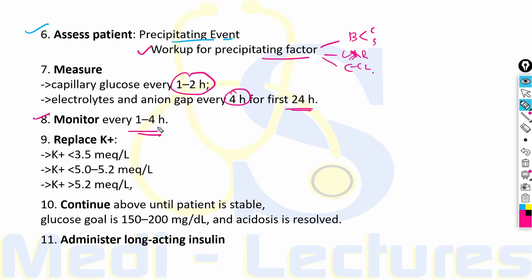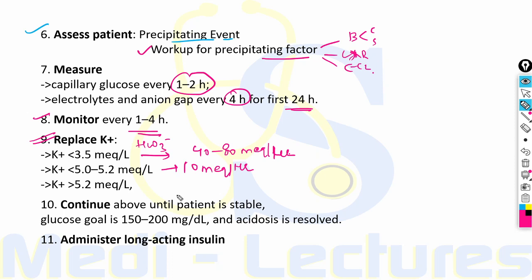For potassium replacement: if initial potassium is less than 3.5 mEq/L, or if bicarbonate has been given, replace potassium at 40 to 80 mEq/hour. If potassium is between 3.5 and 5.2 with normal ECG and normal urine flow, give potassium at 10 mEq/hour. If potassium is more than 5.2, no potassium replacement is needed.